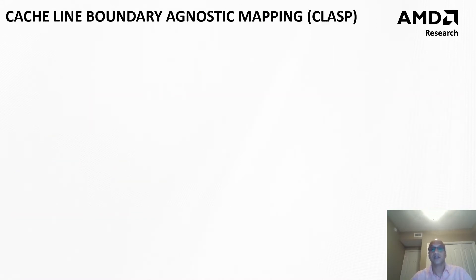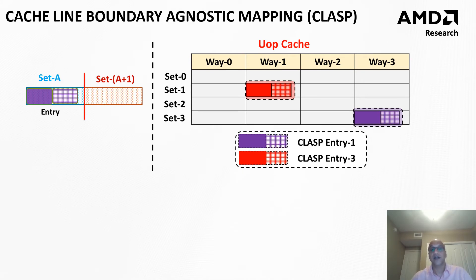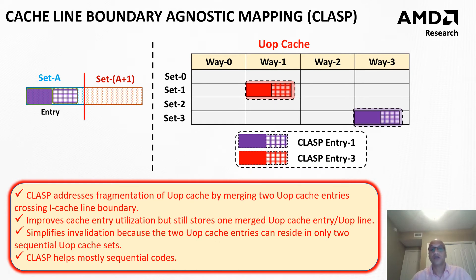To address the fragmentation caused by these termination conditions, we propose two solutions in this paper. The first solution, called CLASP — cache line boundary agnostic mapping — addresses fragmentation as follows. In the baseline, an I-cache line boundary terminates micro-op cache entries, resulting in smaller entries. CLASP relaxes this constraint, resulting in larger micro-op cache entries. This relaxation causes larger UOP cache entries and also results in improved UOP dispatch bandwidth compared to the baseline, because the UOP cache entries are much larger.